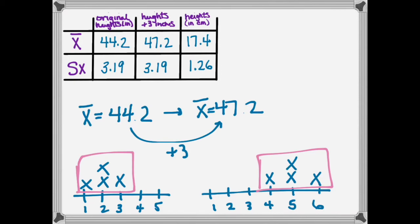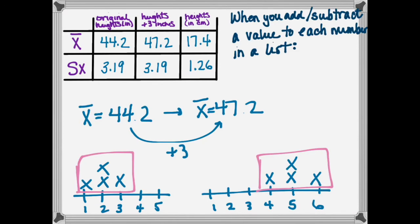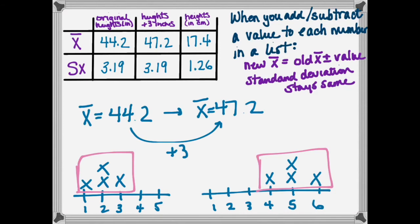Let's write some rules about this. When you add or subtract a value to each number in a list, these things are going to happen. The new mean is going to equal the old mean plus or minus the value, depending on what you're doing. If you're adding, it's going to add by the value. If you're subtracting, it'll subtract by the value. And then the standard deviation is going to stay the same.